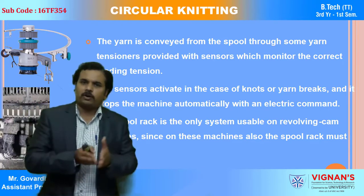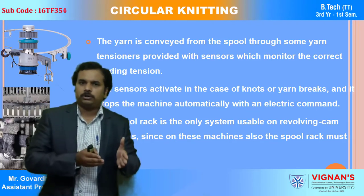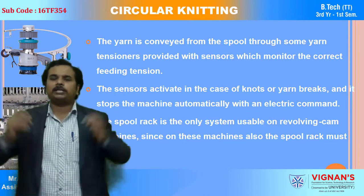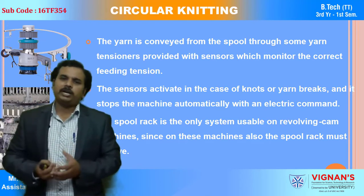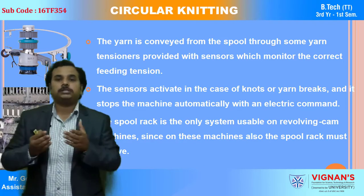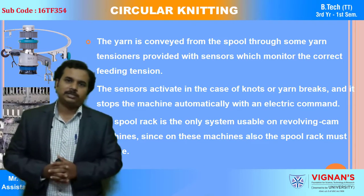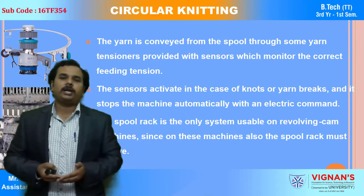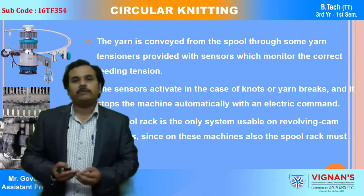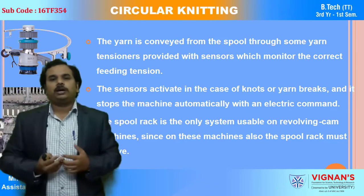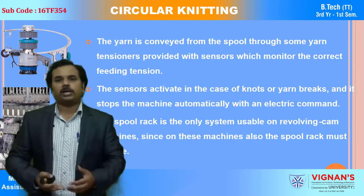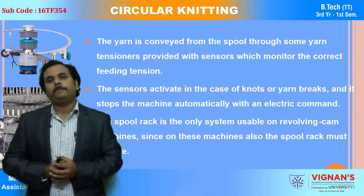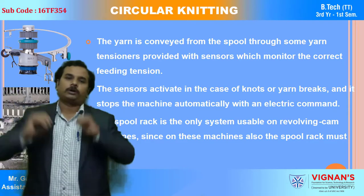Along with this drawback of the circular rack, if we go on increasing the number of packages on top of the creel, the creel weight becomes more and it is difficult to rotate. Also, if any yarn breakages occur, we have to attend to them. If the packages are on the top side, it is very difficult for the worker operating the circular knitting machine to attend to problems — it is very difficult to access the top side of the machine.